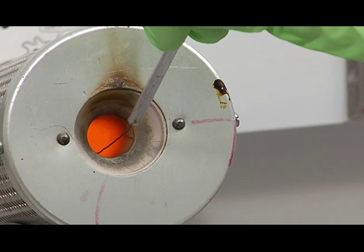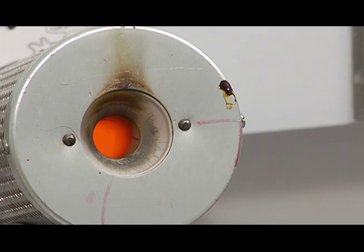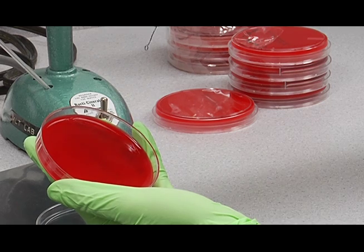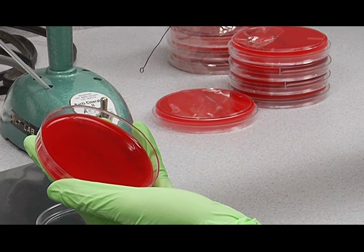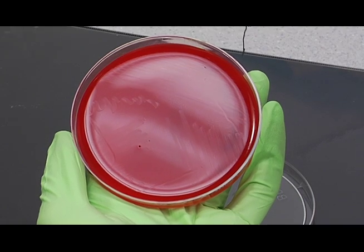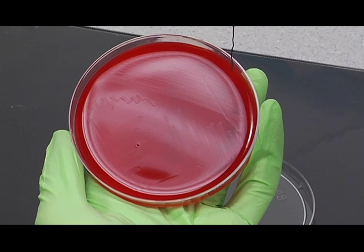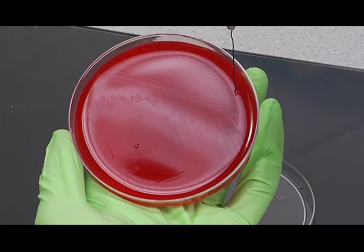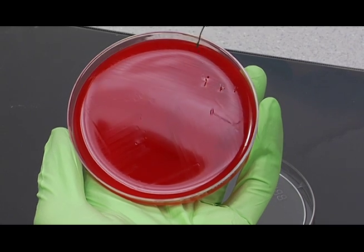And then we're going to flame the loop. And I'll show you how to stab this. To stab the plate, you want to angle the loop directly perpendicular to the plate. And then perpendicular to the streak lines. In this area, you're going to make three stabs parallel to each other, just like this. About that far apart.